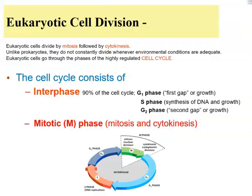Eukaryotic cell division is different from binary fission because eukaryotic cells have many chromosomes, and those chromosomes need to be separated with great accuracy. Eukaryotic cells divide by mitosis, and mitosis is followed by cytokinesis, which is the division of the cytoplasm.